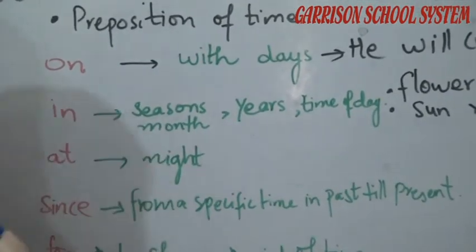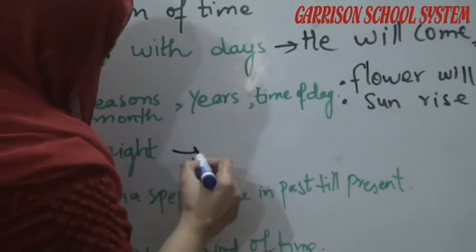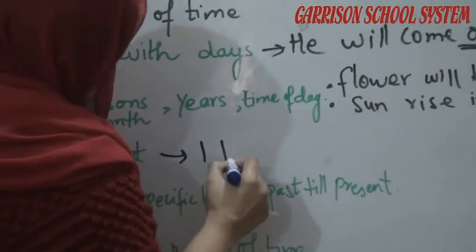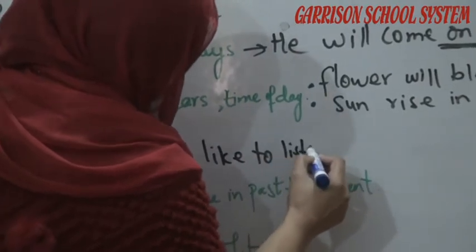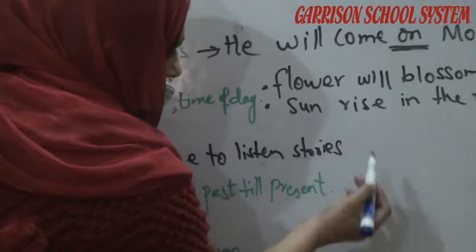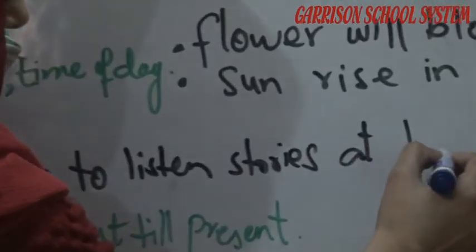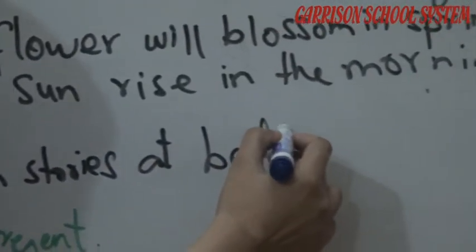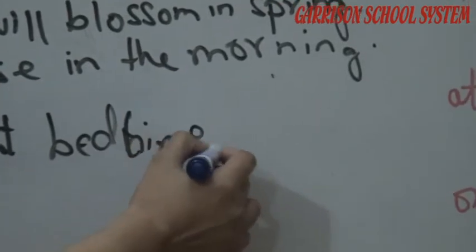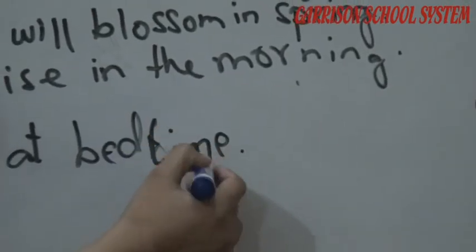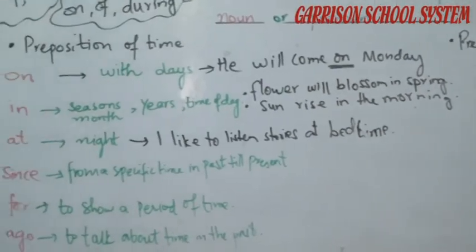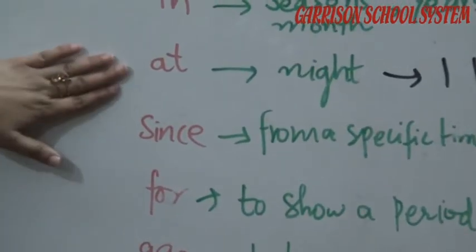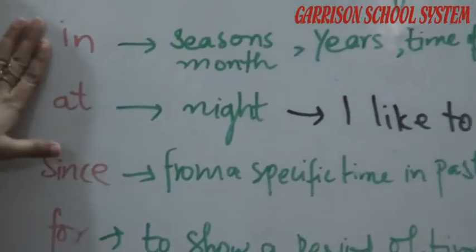'I like my grandmother to tell me a story at bedtime.' Here 'at bedtime' — bedtime refers to the night time. So 'at' is used for night-related expressions like bedtime. 'Since' is used from a specific time in the past till the present.